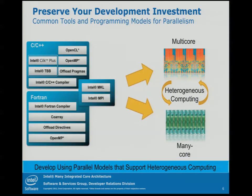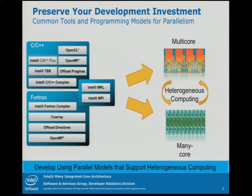What does that really mean? If you're using C or C++, you have access to things like Cilk+, Thread Building Blocks, your C and C++ compiler, OpenCL (available at some point), OpenMP now, and the offload pragmas. For Fortran, you have your compiler, Coarray Fortran (coming), offloads, and OpenMP. Cilk and TBB are C++ only, not Fortran. The common link is that you have Intel MPI and MKL for both Fortran and C/C++.